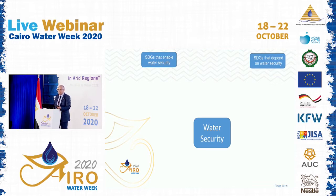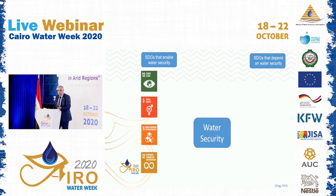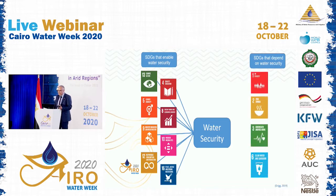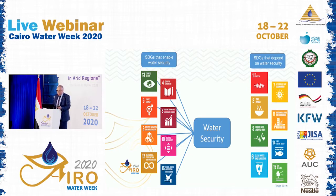You can see them as inputs and outputs. For water security, you need educated people — integrating water education into your education system. You also need to include other enabling SDGs. But once you have water security, you can achieve the rest. There is no ending hunger without water security, and there is no clean water and sanitation without water security itself.